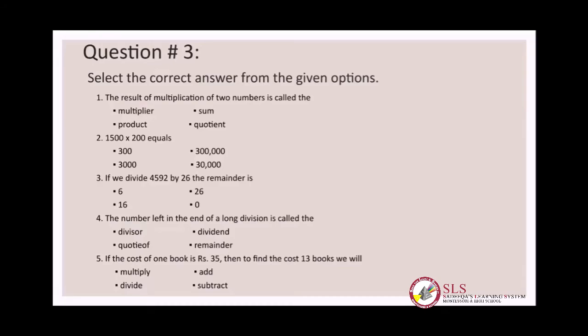Number two: fifteen hundred multiplied by two hundred equals — options are three hundred, three hundred thousand, three thousand, or thirty thousand. We use mental math: fifteen multiplied by two is thirty. Add the two zeros of 1500 and the two zeros of 200 — that gives five zeros with the product, so the answer is three hundred thousand.